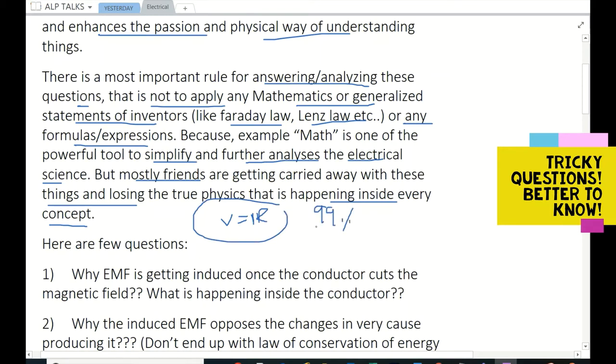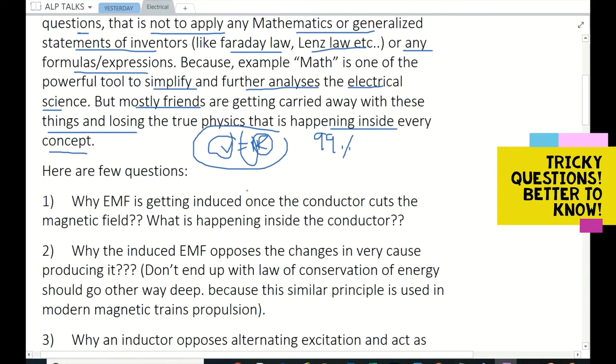That is happening inside every concept. For example, V = IR means 99% of people will simply use and proceed. They don't want to think what is V, what is I, what is R, what it really means. Nobody takes care about it. I don't bother about who don't care, but for the people who are very much interested to learn about electrical things, I'm just trying to give some trigger points to them so that they can spend some time on these things.